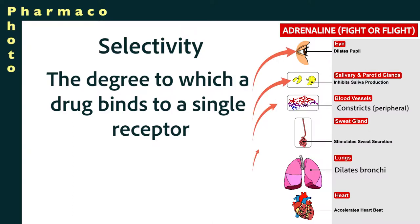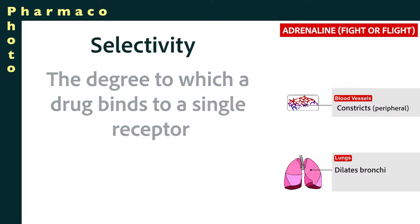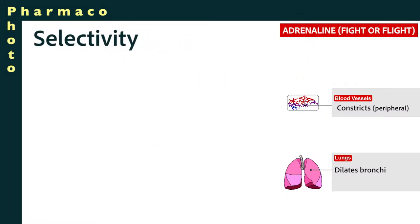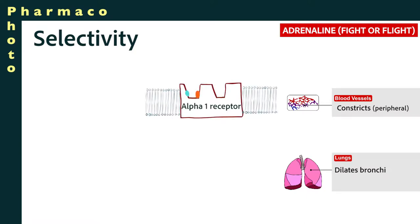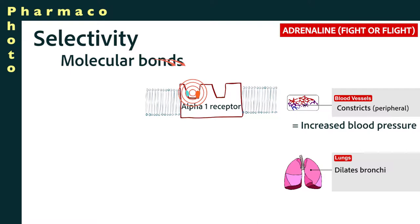The receptors for adrenaline are all the way through the body, but I'm just going to use two receptors in this simple example. We have adrenergic alpha-1 receptors on the peripheral blood vessels — the blood vessels to the skin and the blood vessels to the extremities — and the binding of adrenaline to those receptors will constrict those blood vessels, which in turn may increase blood pressure.